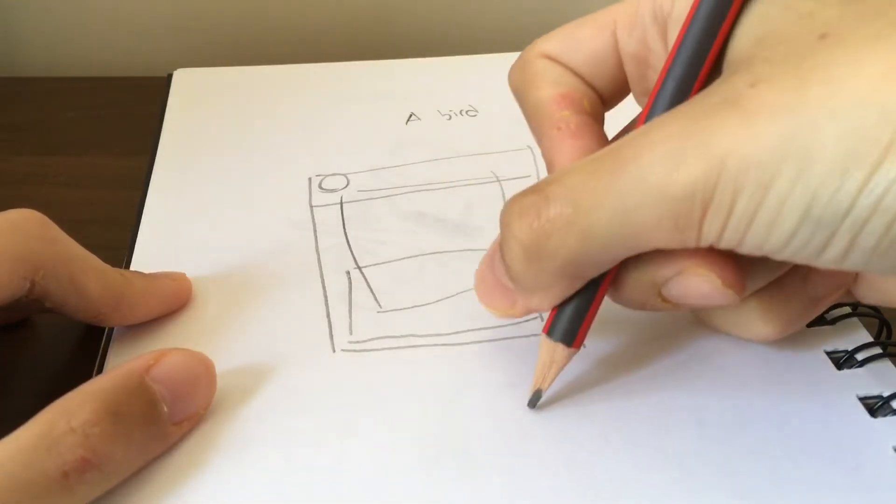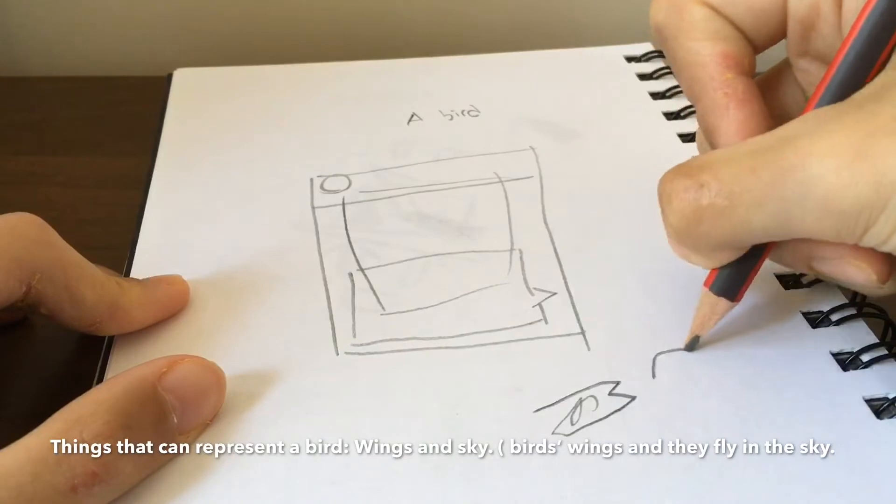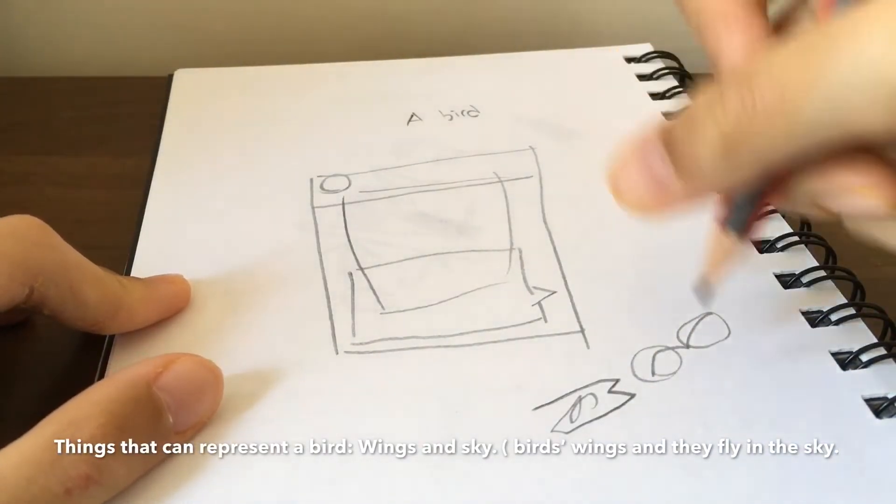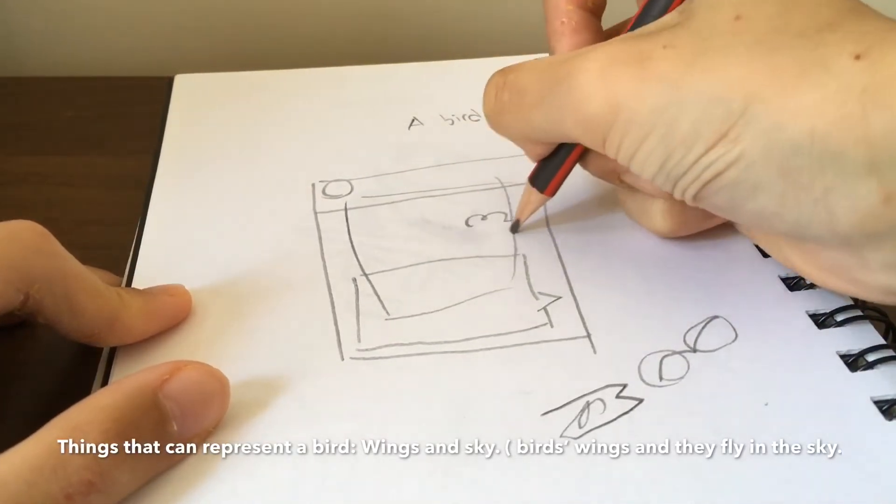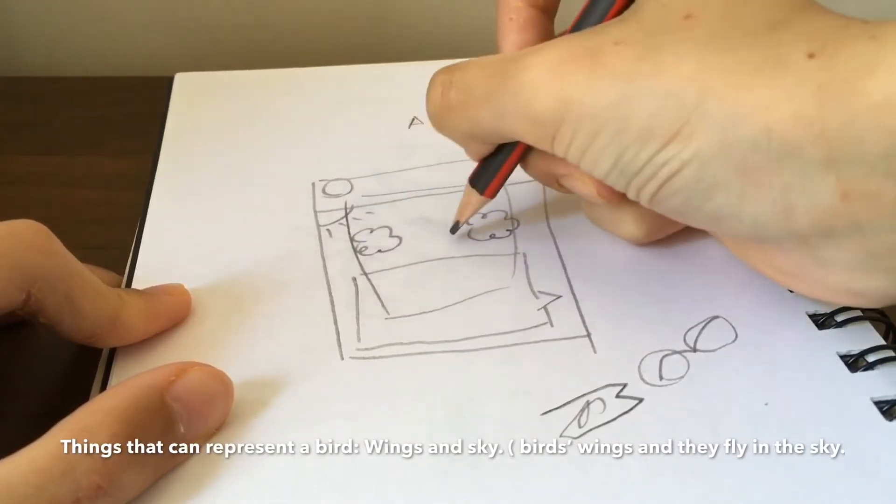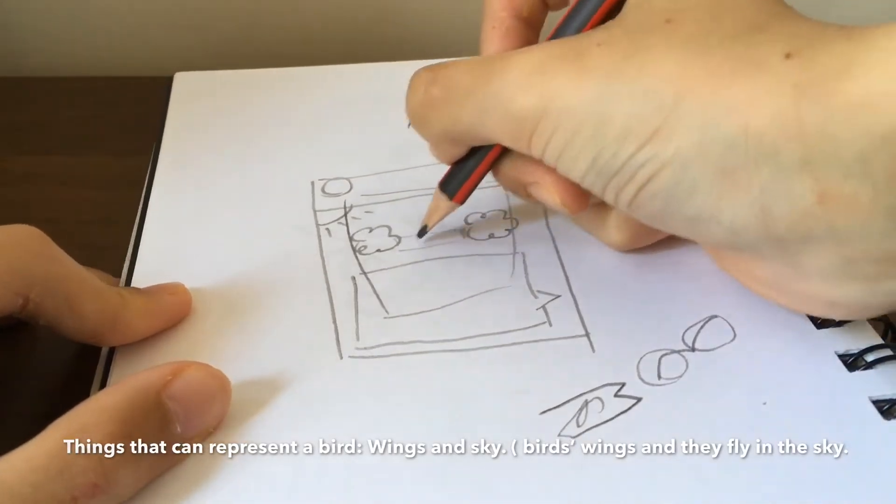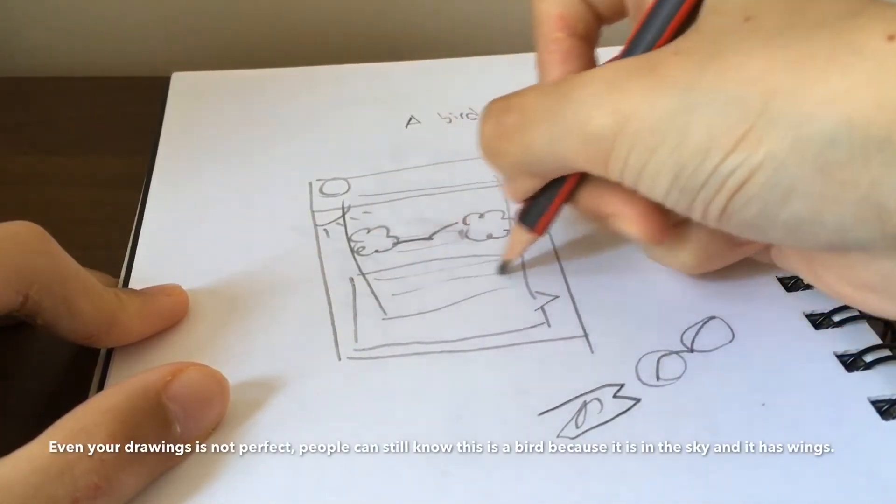For example, this is a bird and the wings that can represent a bird. And also the birds fly in the sky, so you have to draw some clouds or even a sun here. And just draw the main character here. For example, a bird, just draw like this.